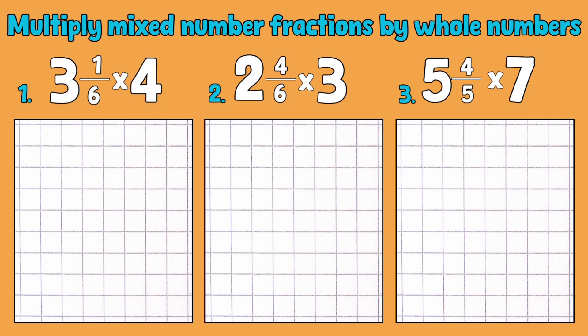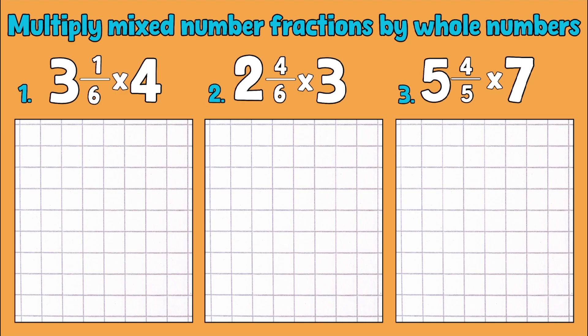Let's get started. We have our three examples. Three and one sixth multiplied by four is our first one. Now, we've got some mixed numbers, so it's important to know what a mixed number actually is. It's made up of a whole number and a fraction part, so three and one sixth.